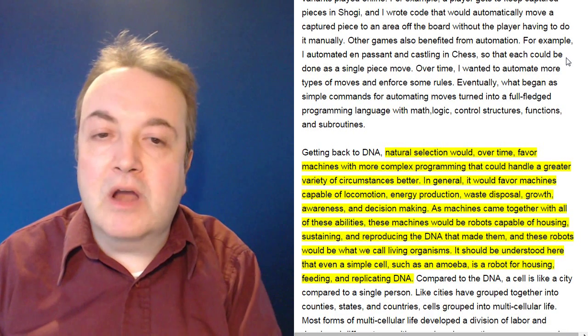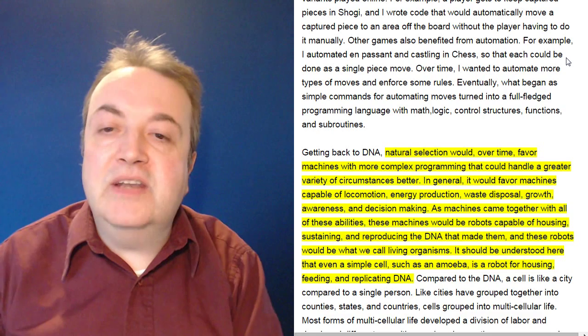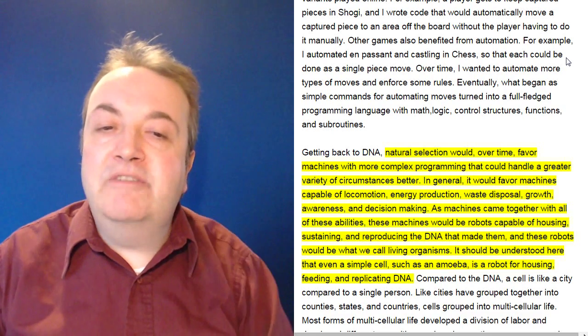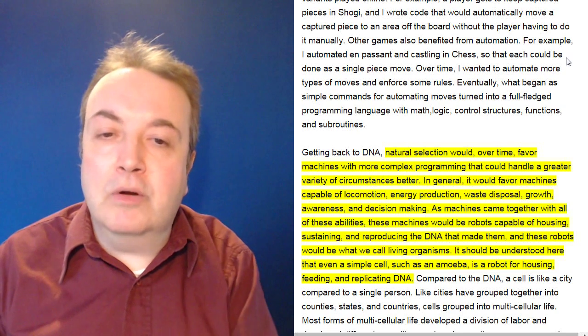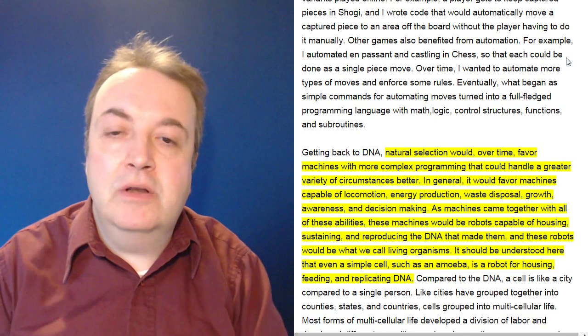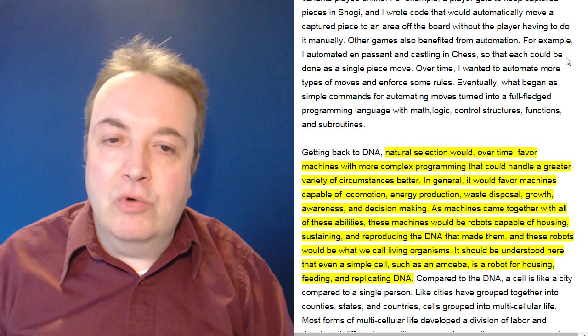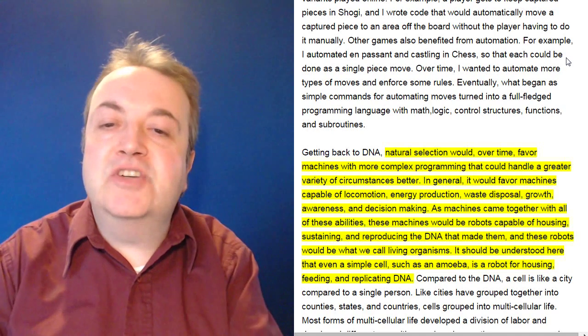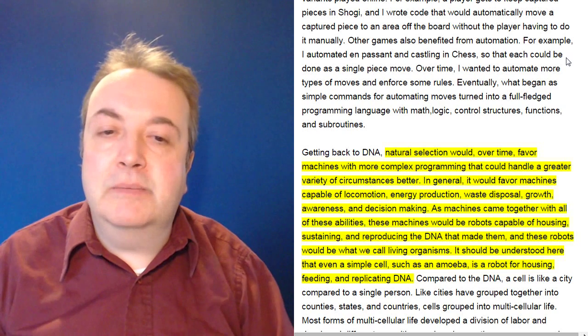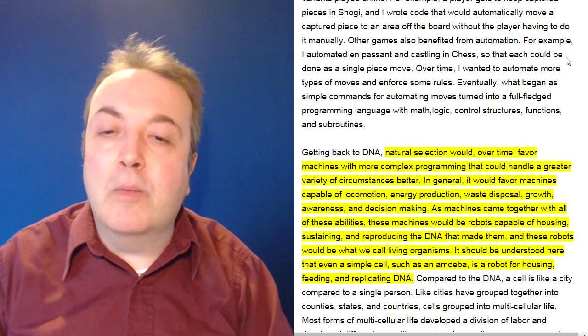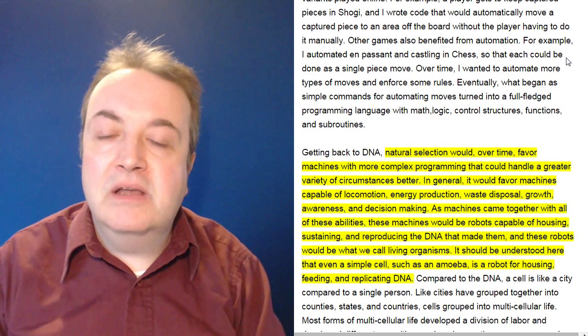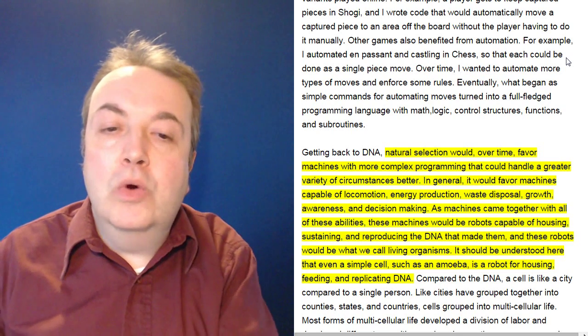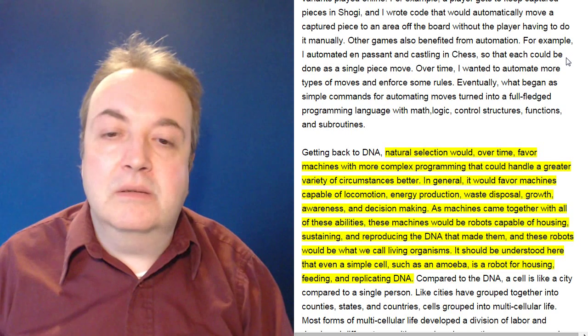Natural selection would, over time, favor machines with more complex programming that could handle a greater variety of circumstances better. In general, it would favor machines capable of locomotion, energy production, waste disposal, growth, awareness, and decision making. As machines came together with all of these abilities, these machines would be robots capable of housing, sustaining, and reproducing the DNA that made them. And these robots would be what we call living organisms.